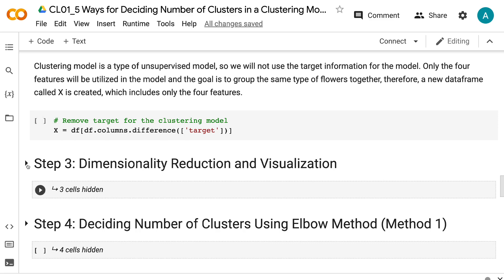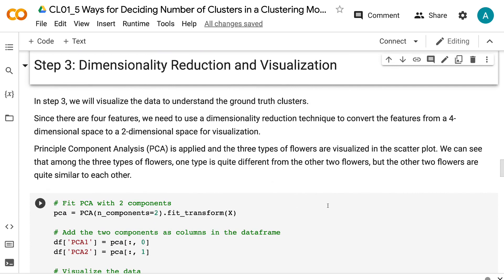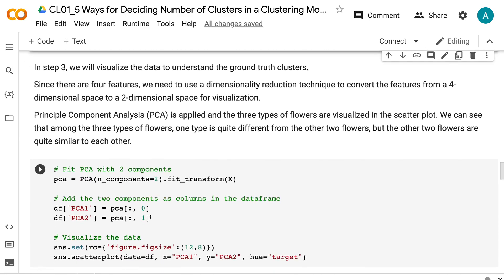In step 3, we will visualize the data to understand the ground truth clusters. Since there are four features, we need to use a dimensionality reduction technique to convert the features from a four-dimensional space to a two-dimensional space for visualization. Principal component analysis is applied and the three types of flowers are visualized in the scatter plot.